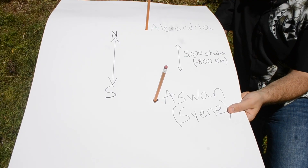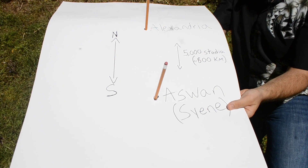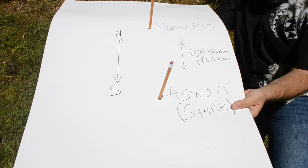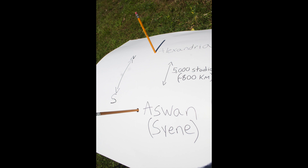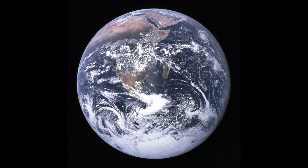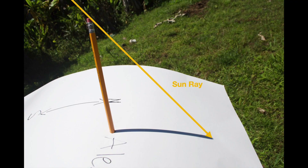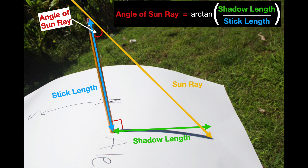Step three: he then stuck a vertical rod down in Alexandria. If the earth was flat, there would be no shadow in either Aswan or Alexandria, because the sun would be directly overhead of both. But if the earth is curved, you will find that when there is a very small shadow or no shadow at all in Aswan, there is a significant or a long shadow in Alexandria. The only way that this is possible is if the earth was curved. By measuring the length of the stick and measuring the length of the shadow left behind on the ground, you can use a little bit of trigonometry, or Pythagoras' theorem, to figure out the angle of the sun's rays as they hit the earth.